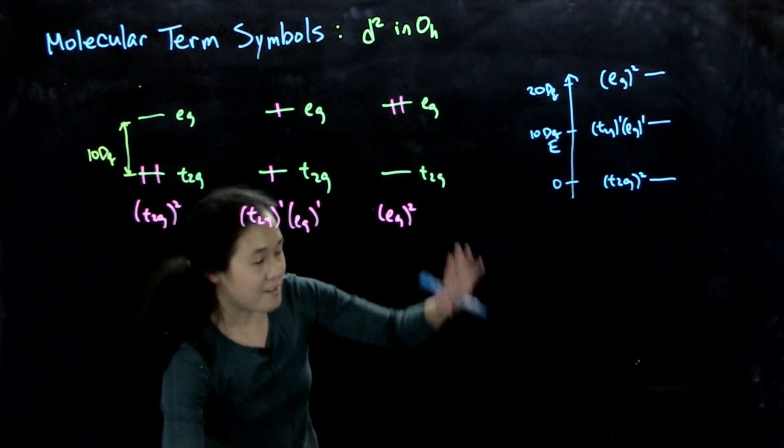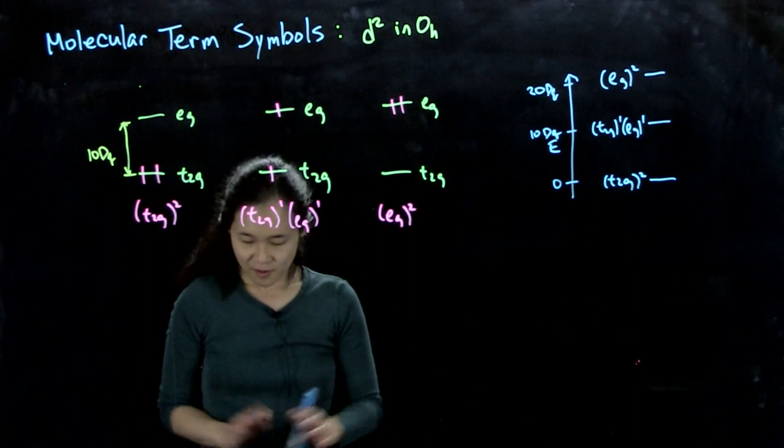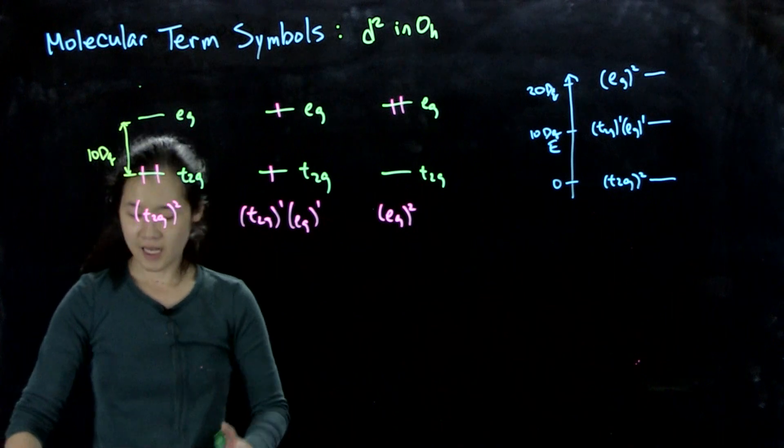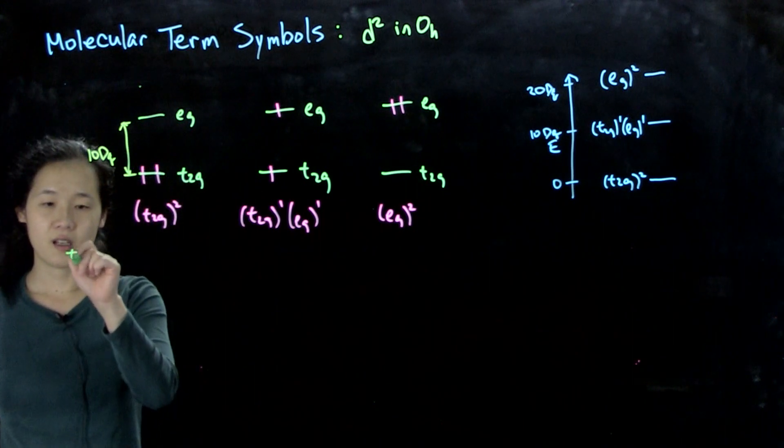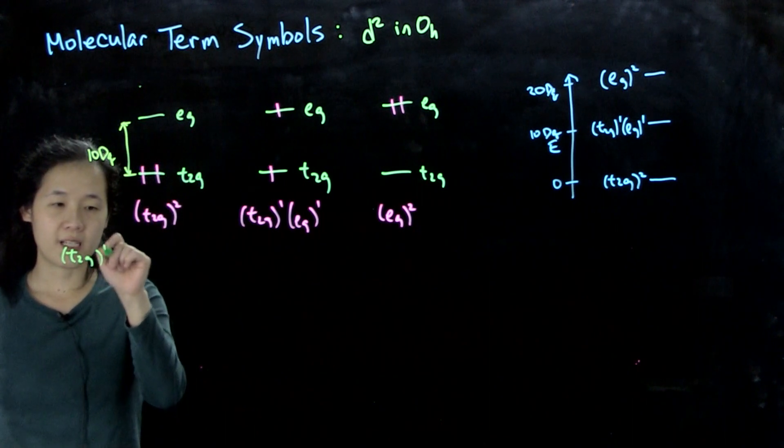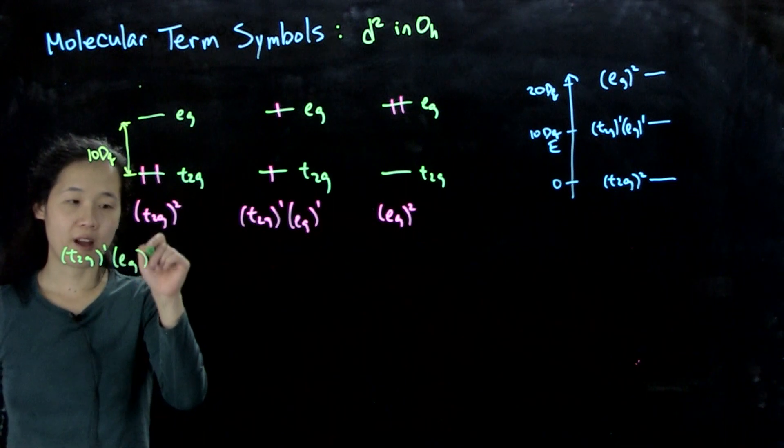So rather than starting at the very bottom, the actual easiest thing to do would be, let's start first at this t2g¹, eG¹ configuration. We want to find out what states that we have.